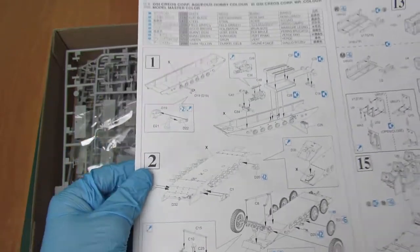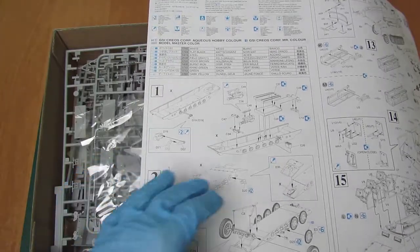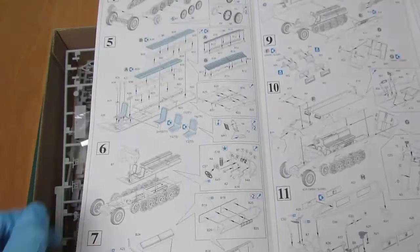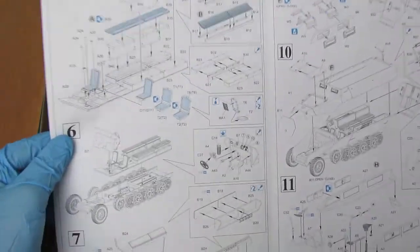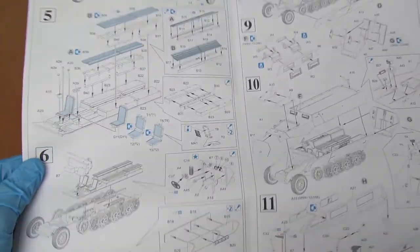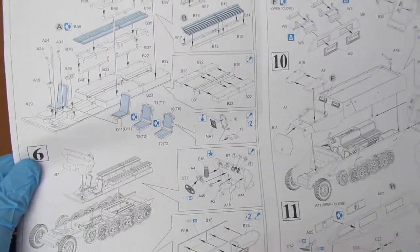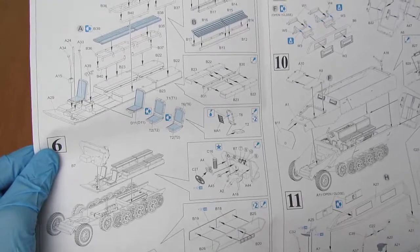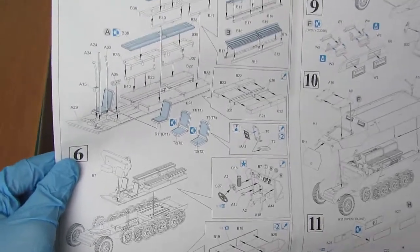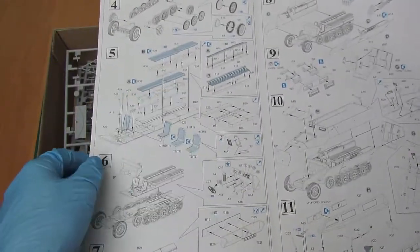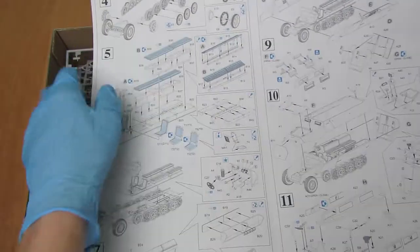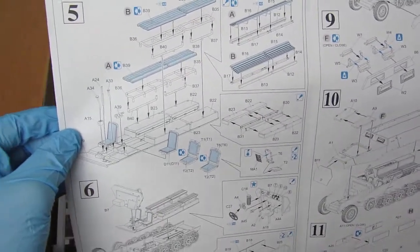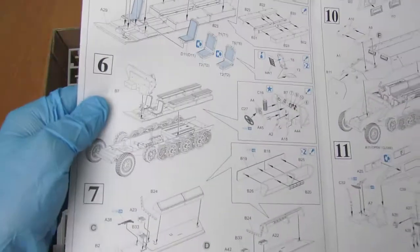To jest mały model, skala 1:35, naprawdę mały w stosunku do czołgu. Nawet jak byłem na rekonstrukcji to Sd.Kfz. jeździły i przy czołgach były to w miarę małe pojazdy. Przedział dla żołnierzy widzę, system montażu nadwozia, podwozie.